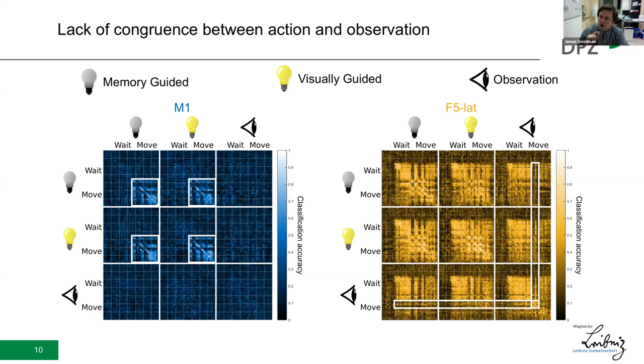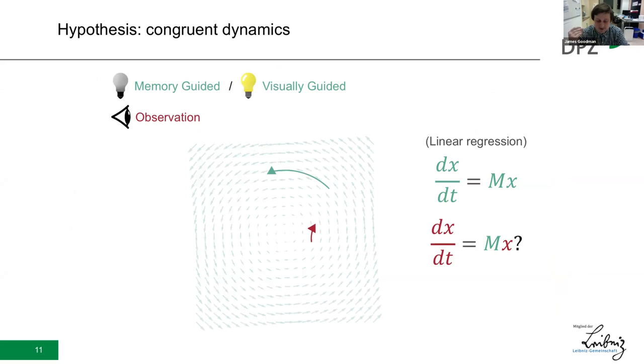But okay, this is all a very representational framework. What if we consider a complementary dynamical systems framework of neural activity? One where we, for example, use linear regression to fit the firing rates and their derivatives in state space, and ultimately determine how well the dynamics of one task explain activity in the other. How similar are action and observation in this framework?